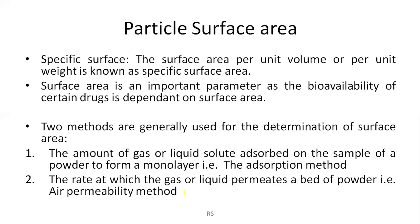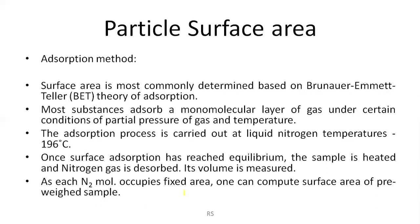The adsorption method is based on the Brunauer-Emmett (BET) theory of adsorption. A large surface area allows good adsorption of gas or solute from solution. The volume of gas adsorbed per gram of adsorbent is plotted against the pressure of gas introduced at constant temperature, giving the adsorption isotherm. At low pressure the gas adsorbs on the surface to form a monolayer. The adsorption process is carried out at liquid nitrogen temperature of about −196°C. Once surface adsorption reaches equilibrium, the sample is heated to expel the adsorbed nitrogen gas.